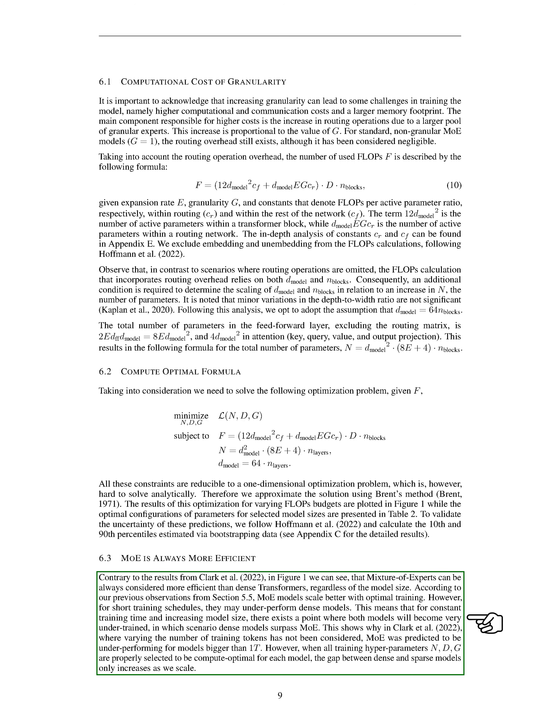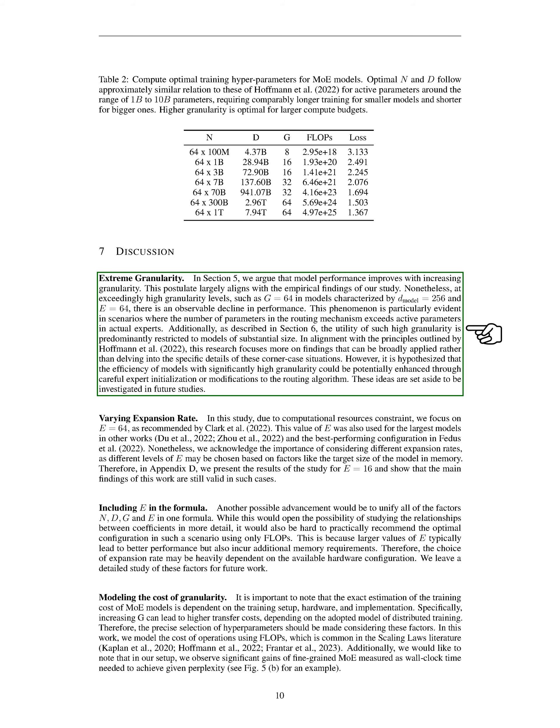Lastly, we discuss the concept of extreme granularity. While model performance generally improves with higher granularity, we observe a performance decline at very high levels of granularity, especially when the routing mechanism's parameters outnumber those in the actual experts. This decline is more pronounced in larger models. We suggest that the efficiency of highly granular models could potentially be improved through better expert initialization or routing algorithm adjustments, though these ideas are reserved for future research.